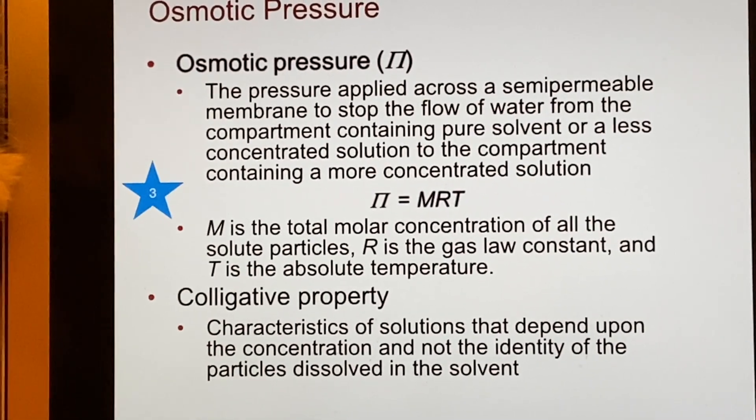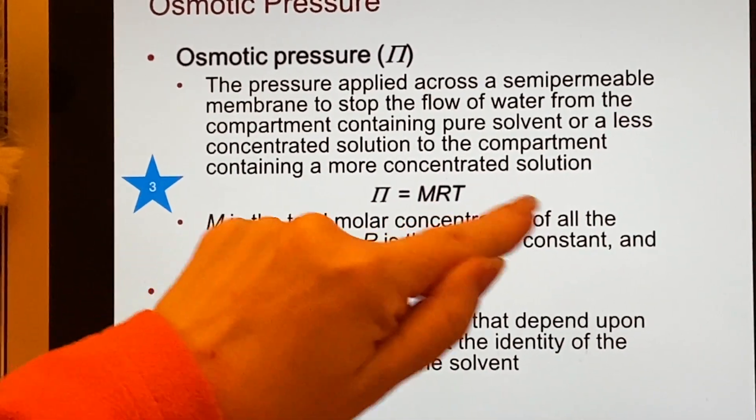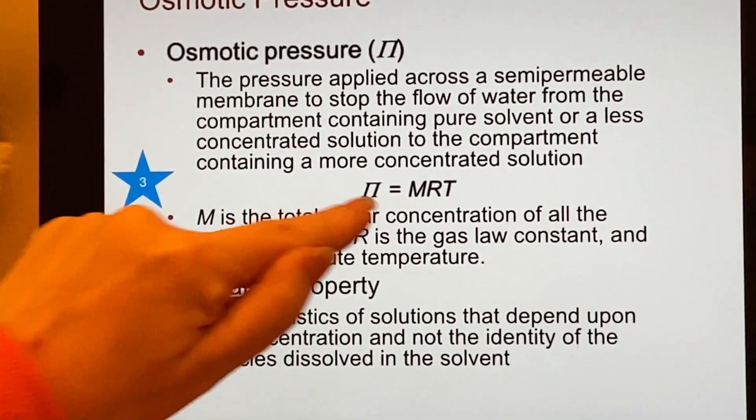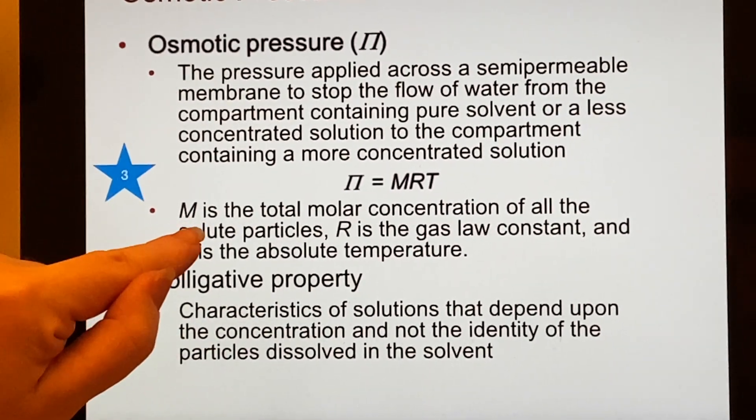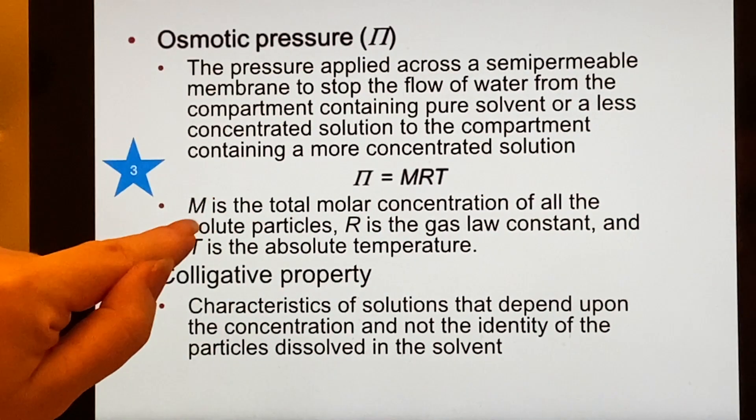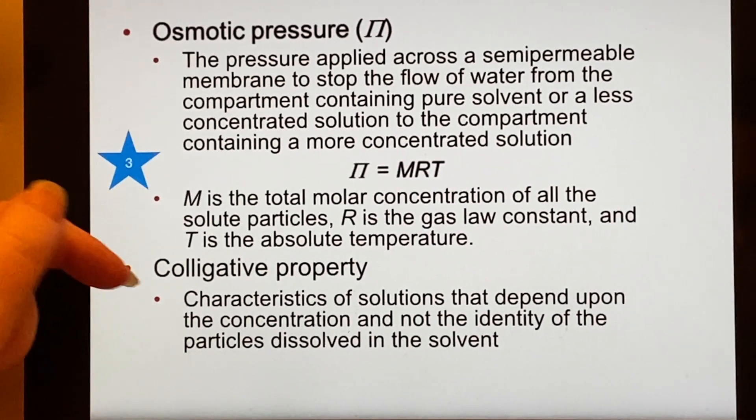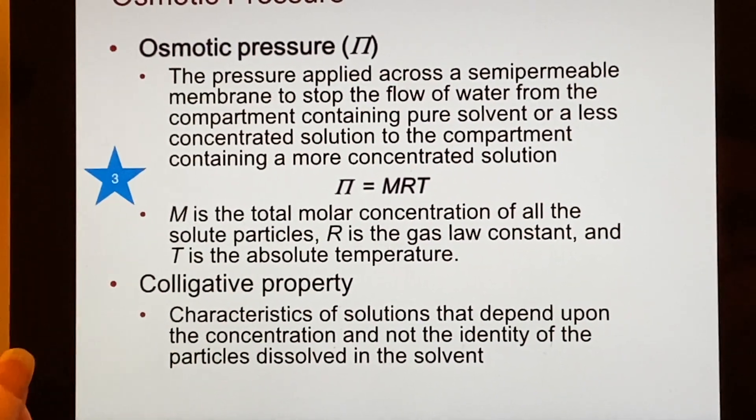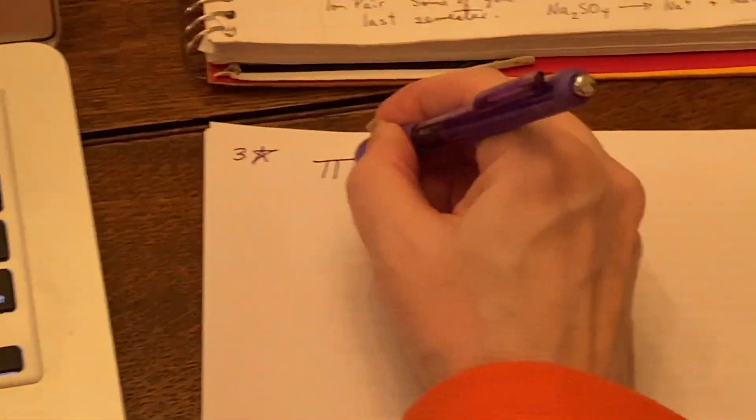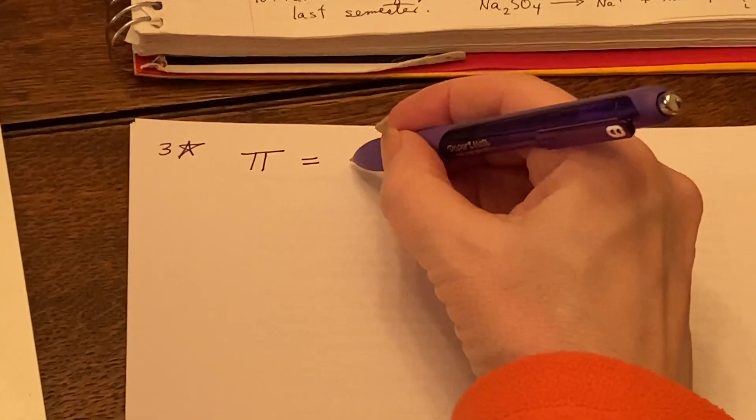And we have a formula for it. This formula says π = MRT. What are these? We already said what π was—it was a pressure. M is molar concentration, so this capital M is molarity like we've learned about before. R is the gas law constant, and T is the absolute temperature.